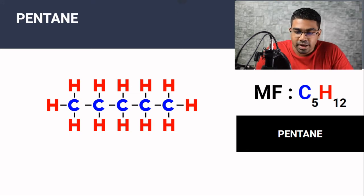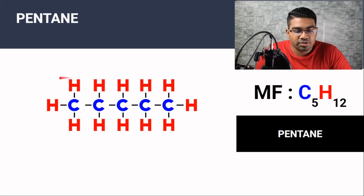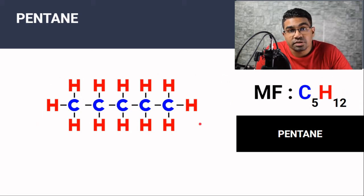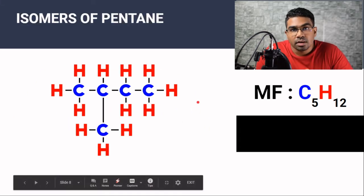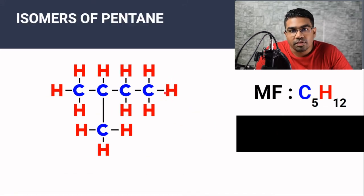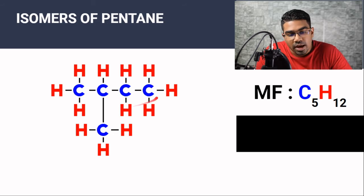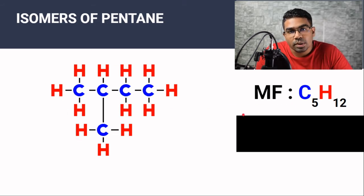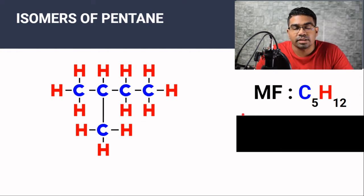Pentane has 5 carbon atoms and 12 hydrogen atoms, and this is the structural formula of pentane. This is an isomer of pentane. You can clearly see the difference in the structure, but when you look at the number of atoms, this molecule also has 5 carbon atoms and 12 hydrogen atoms. Therefore it has the same molecular formula as pentane but a different structural formula, and therefore it is an isomer of pentane.